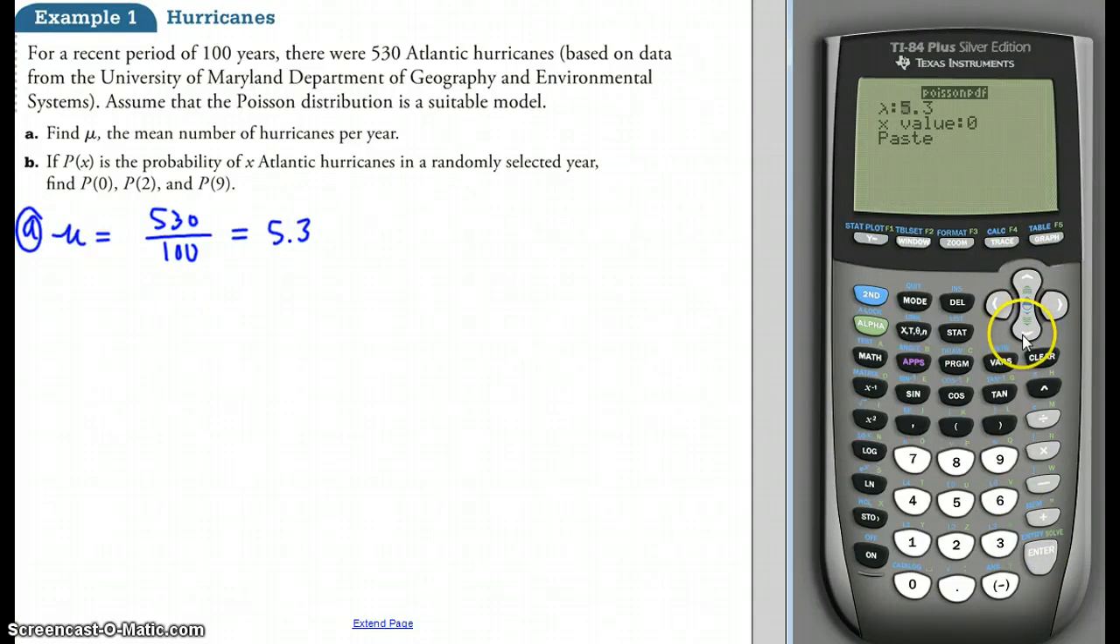Now if I want to calculate P(2), I'd do the same exact thing. Click second vars to access the Poisson PDF function. The mean is 5.3, the x value is 2. Click enter, paste, and enter. That gives me the probability. So the probability of getting two hurricanes in a randomly selected year would be 0.07, so seven percent.